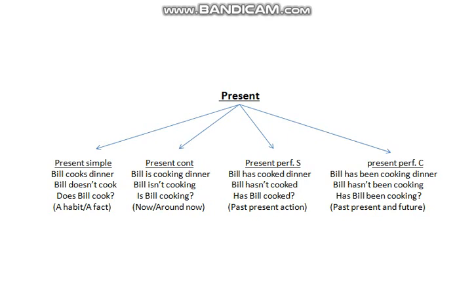For the present simple, we call it simple because it's really simple. For example: 'Bill cooks dinner.' Bill is the subject, cook is the verb, and dinner is the object. The negative form is 'Bill doesn't cook dinner,' and the question form is 'Does Bill cook dinner?' In the negative form you use don't or doesn't, and in questions you use do or does — depending on the pronoun. For he, she, and it, you add s, es, or ies to the verb in the positive form.